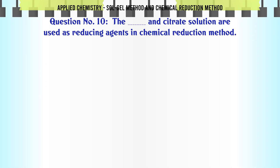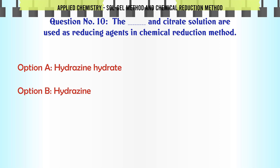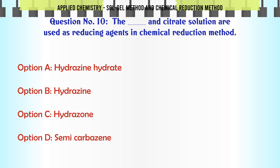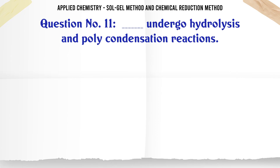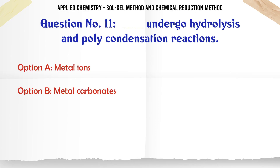Which of the following and citrate solution are used as reducing agents in the chemical reduction method? A. Hydrazine hydrate, B. Hydrazine, C. Hydrazone, D. Semicarbazone. The correct answer is Hydrazine hydrate.